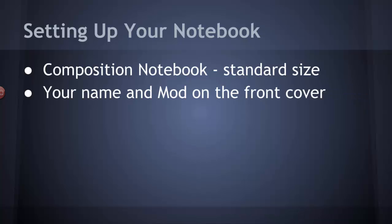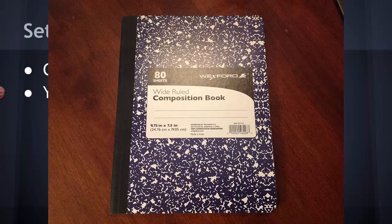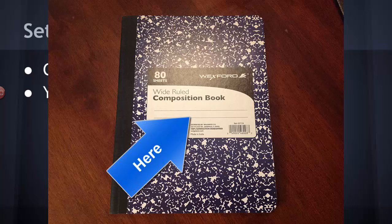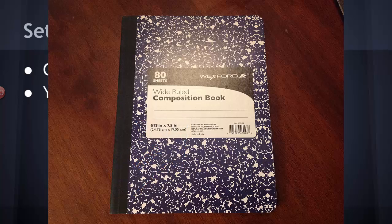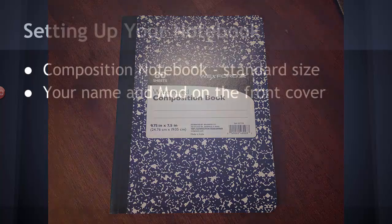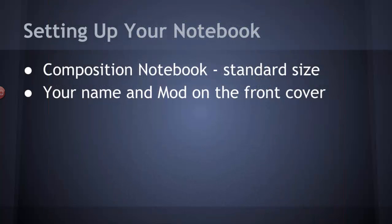On the front cover, hopefully there is an area where you can write your name and the mod that you have my class. You want to do this in permanent marker so that it doesn't rub off or erase. That way, with a bunch of lab notebooks lying around, you'll always be able to tell which one is yours. If you want to get one of the fancy colored composition notebooks, that's fine too - it might help you easily find it in the stack. Make sure you put your name and mod on the front cover.